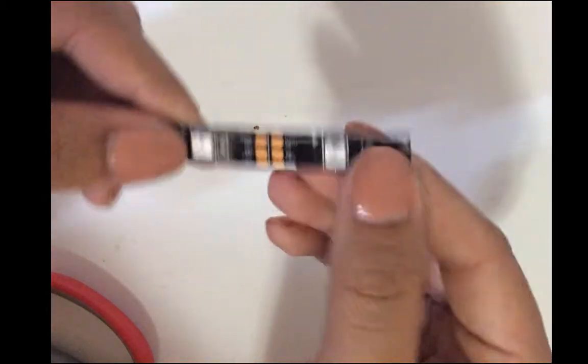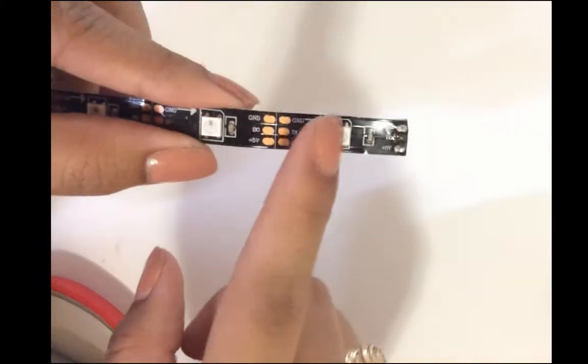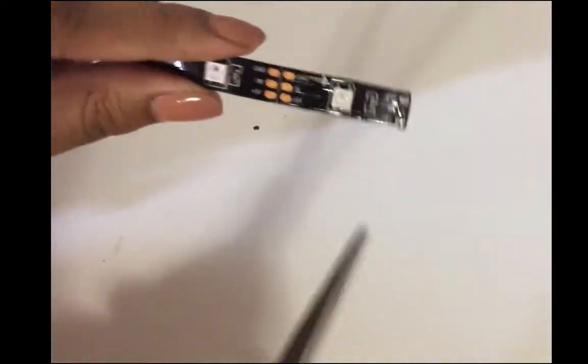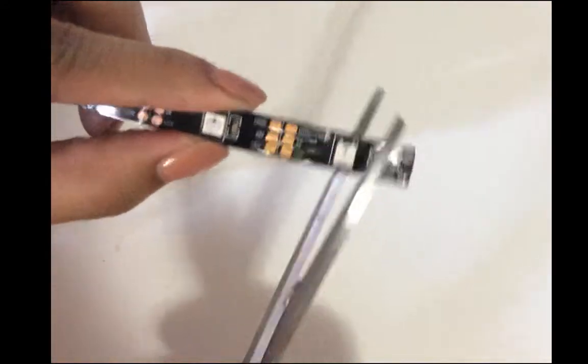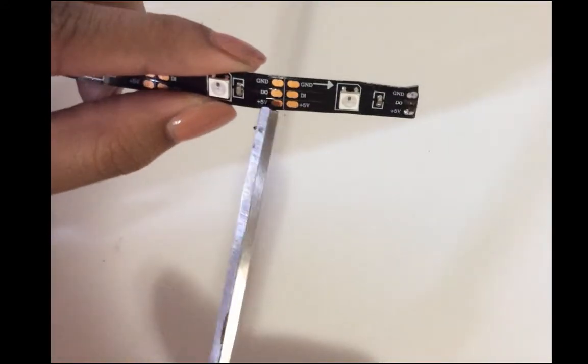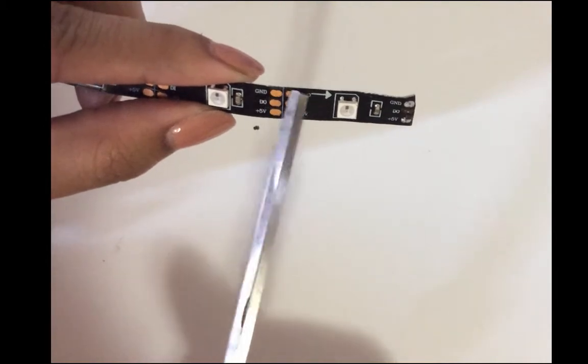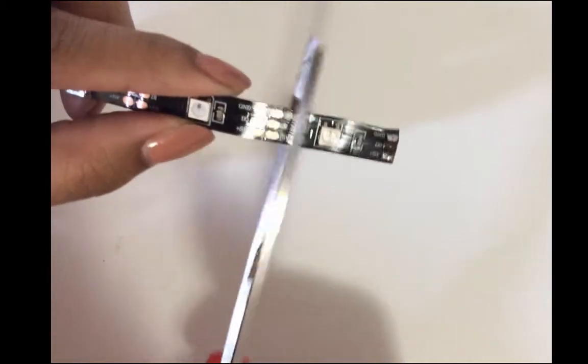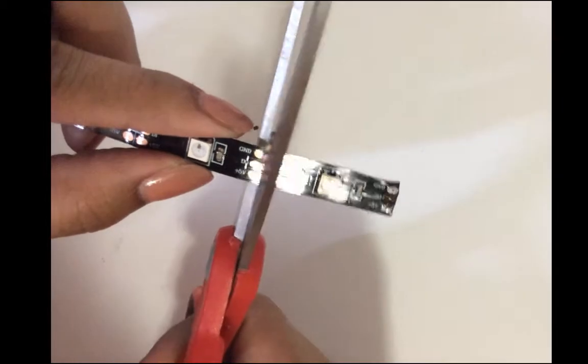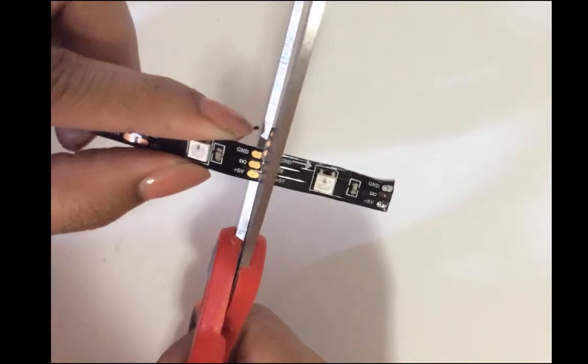So I'm going to cut it off and replace this particular chunk. When you cut these strips, what you're going to do is find where there's in between two pads and there's a line there, and you're just going to cut right here.